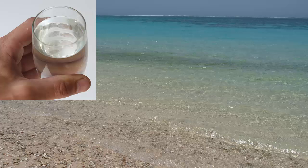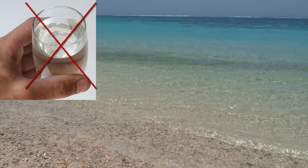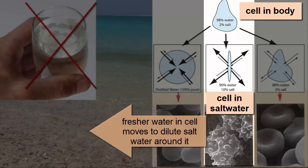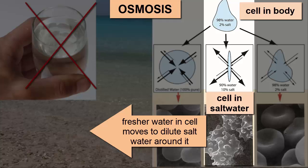Can we drink saltwater to quench our thirst? Absolutely not. When seawater enters our bodies, the fresher water in our cells rushes out of those cells to dilute the salty water that we just drank. That process is called osmosis, and we can't stop it from happening inside our body cells. When we feel thirsty, it's because our bodies need more water, and drinking saltwater would just cause our bodies to lose even more of the fresh water they want to replenish.